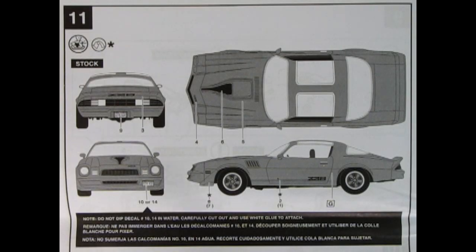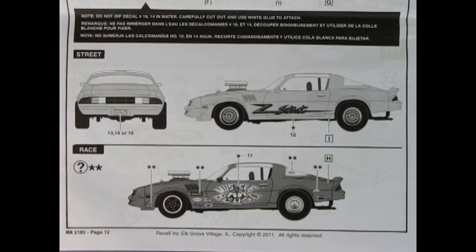Panel 11 shows us the decal locations for our factory stock version of the Camaro. There's all the different stripes and the Z28 logo going on and making the car look wonderful. Down below we have the decal location for our street and race version. Here we have the Z street decal, which goes on the side, and for our race car we've got factory sponsors as well as muscle bound for the doors.